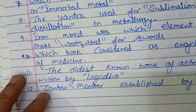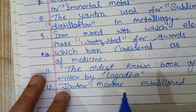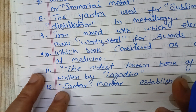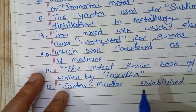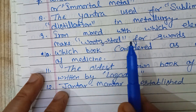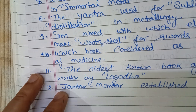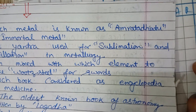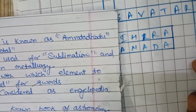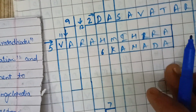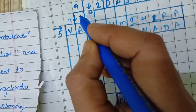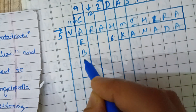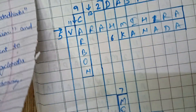Ninth: which element is mixed with iron to make wootz steel for swords? This popular ancient material, wootz steel, is made by mixing iron with Carbon — C-A-R-B-O-N.